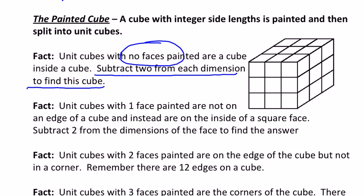Fact number two, unit cubes with one face. Well, the only way for it to be one face is if it's actually not on an edge. In the picture of the three by three, each face only has one cube or one square that's only painted once.